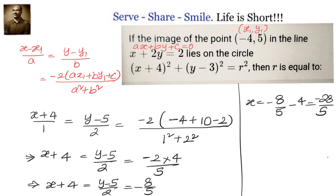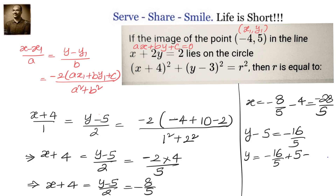Then we have y minus 5 by 2 equals to minus 8 by 5. That means y minus 5 equals to minus 16 by 5, and y equals to 5 minus 16 by 5. Taking LCM and simplifying, we get y equals to 9 by 5. So the image is minus 28 by 5 comma 9 by 5.